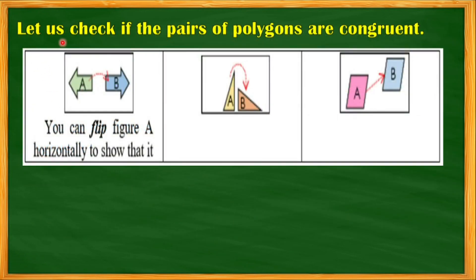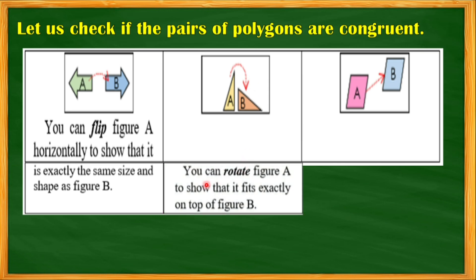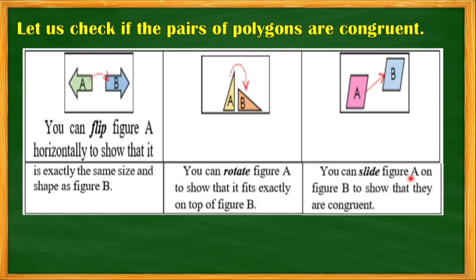Let's check if the pairs of polygons are congruent. For this one, you may flip figure A horizontally to show it is exactly the same size and shape as figure B — so they are congruent. For this next one, you may rotate figure A so it fits exactly on top of figure B. And for this one, you can slide figure A onto figure B to show that they are congruent.